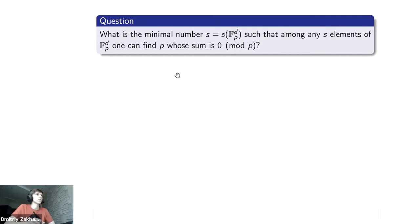The problem of Erdős-Ginzburg-Ziv is as follows: suppose you have a set of points in a vector space Fp to the power d, the d-dimensional space over a finite field, and you want to find p elements from this set such that their sum is zero. You are looking for the minimal number s such that every set of size s has such a subset of size p.